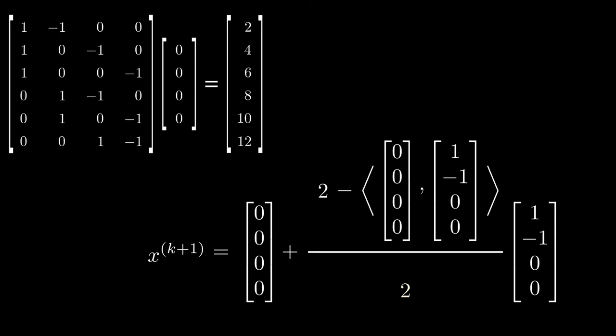We're going to simplify this one step at a time, starting with the numerator. The 2 represents the desired difference between these two teams' rankings, and the inner product here gives us the current difference in the team's rankings. This gives us 0, which makes sense because the teams are currently both ranked 0, so that difference is 0. Subtracting these two numbers gives us the difference between what their difference should be and what it currently is. Here, that is 2.